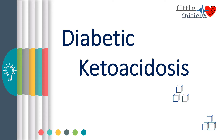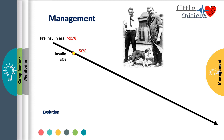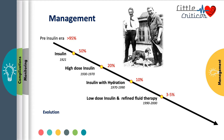In part 2 of this video we will be looking at management of diabetic ketoacidosis. DKA was a disorder with more than 95% mortality in the pre-insulin era. With the discovery of insulin by Banting and Best in 1921, a major reduction in mortality occurred. In earlier days, high dose insulin ranging from 5 to 6 units per kg per day was used. Later, the combination of insulin with adequate hydration brought down mortality to 10%, and low dose insulin with refined fluid therapy reduced it further to 3 to 5%.